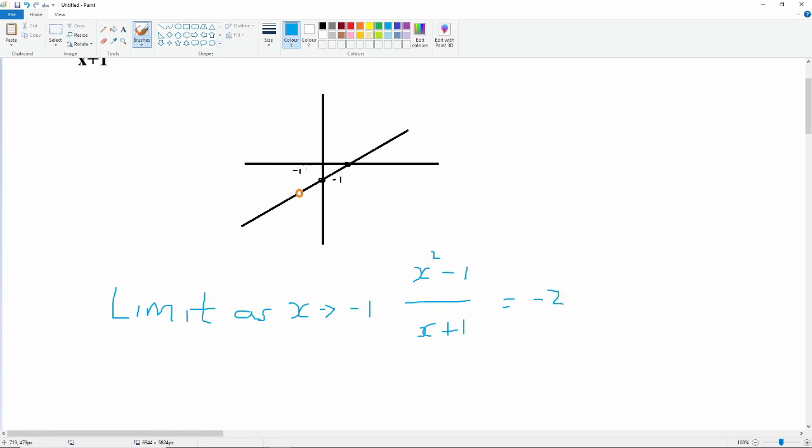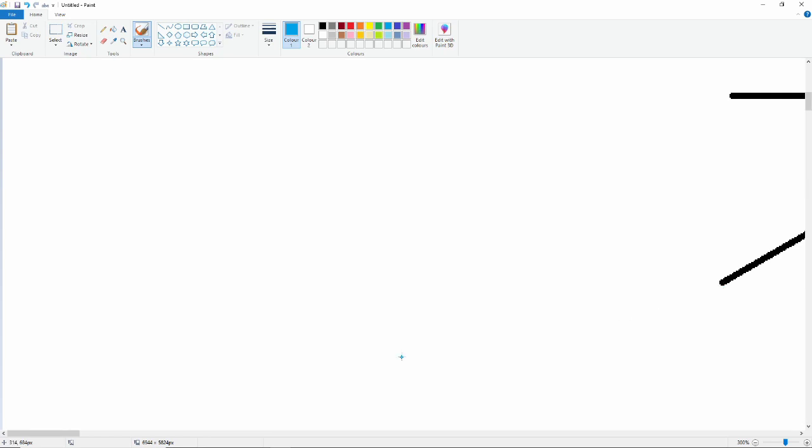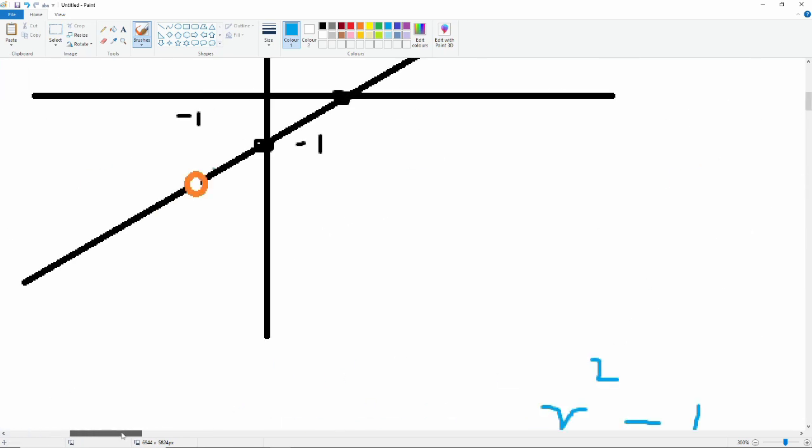So I'm actually going to fill that gap in in a different color to show that this is not a real value. It doesn't exist. This value is undefined. But if it wasn't undefined, it would be logical to assume that this line carried on straight through. If this function was continuous, it would go through this point. But in fact, it isn't continuous.